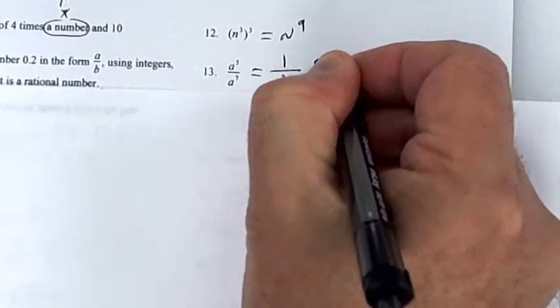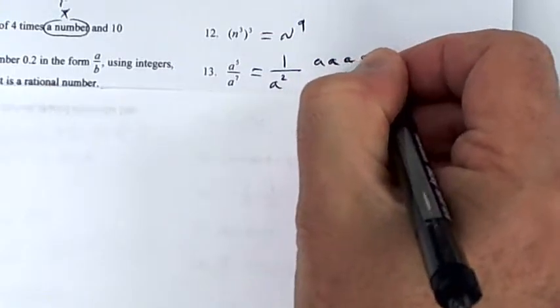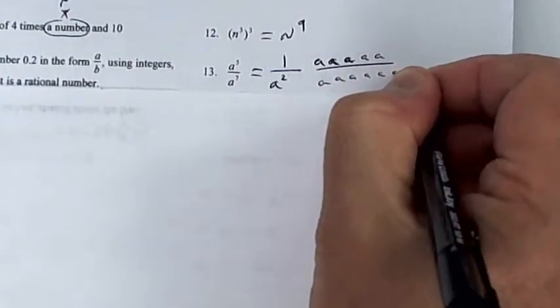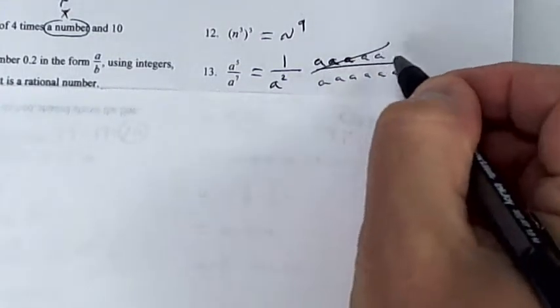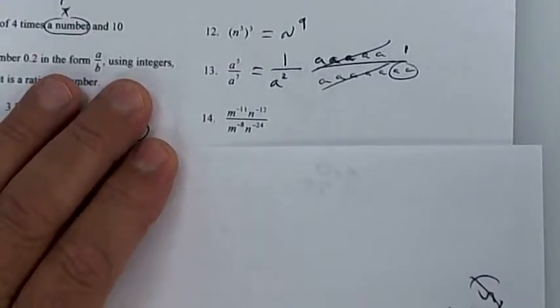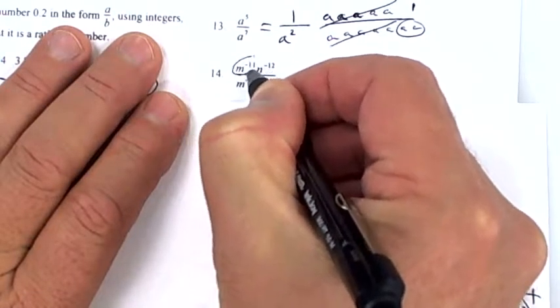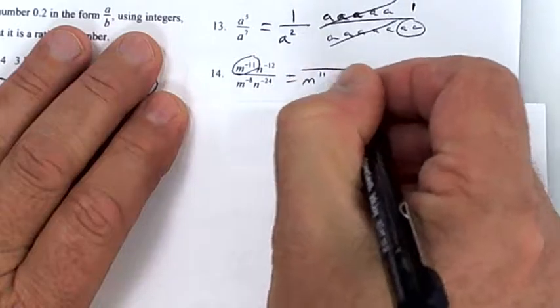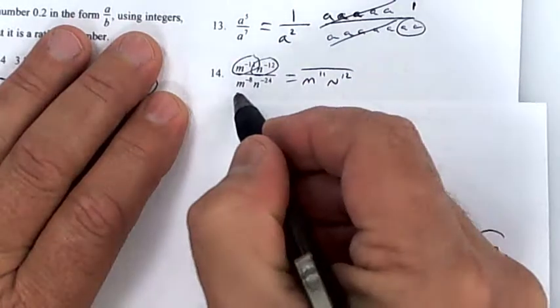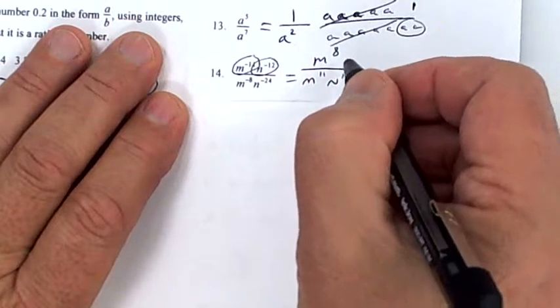If that confuses you, expand it out. These five knock out with those five and you're left with two on the bottom, so you put a one on the top. For the next one, take all the m's and put them at the bottom — m to the 11th on the bottom, n to the 12th on the bottom. Move these two up: 8 and 24.